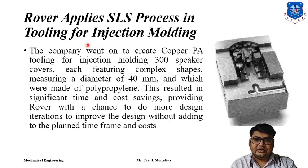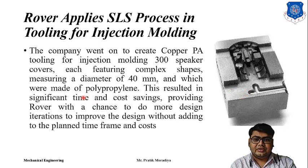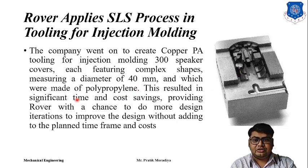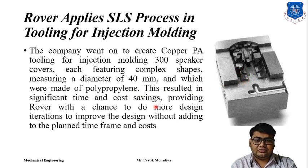Range Rover used SLS for manufacturing tooling for injection molding. They made a prototype from polypropylene, used it as a pattern to cast an aluminium die, and then used that die for injection molding, saving a great deal of time.